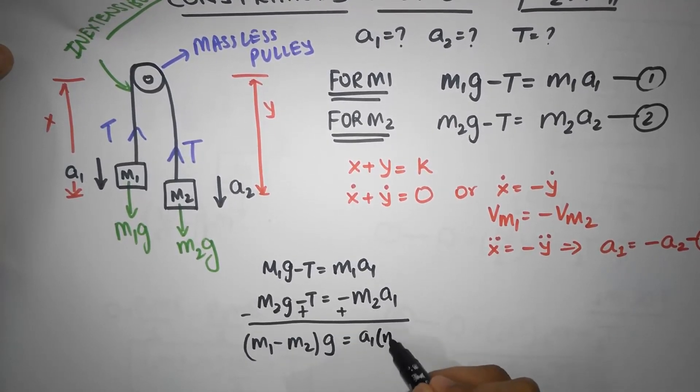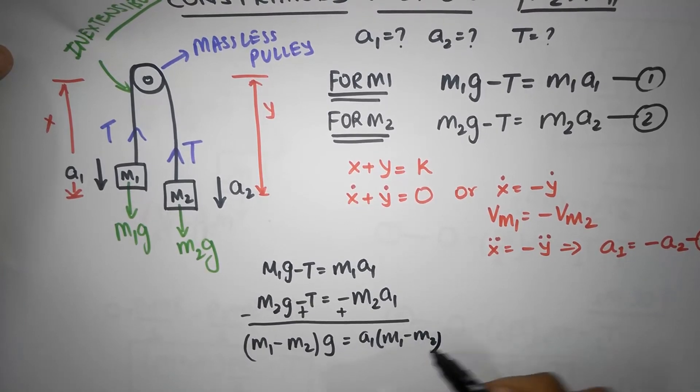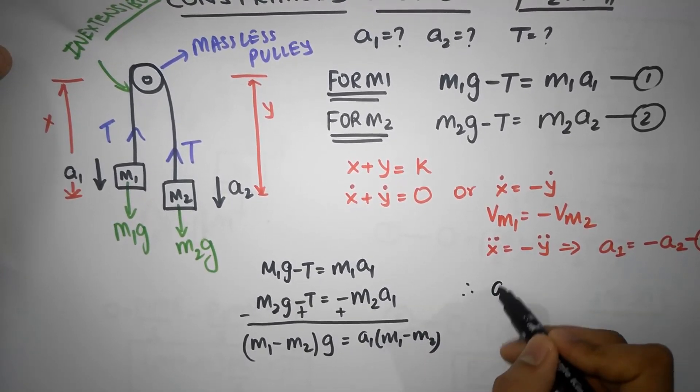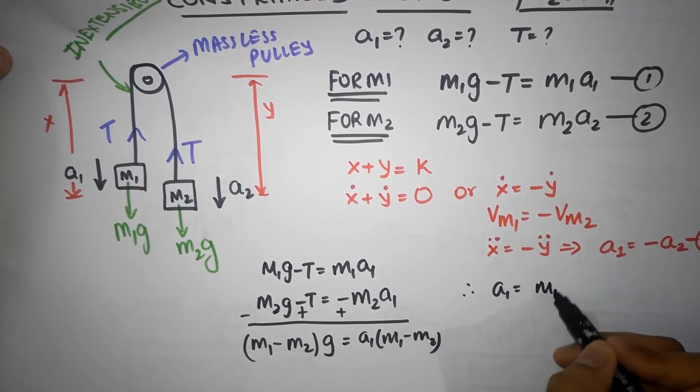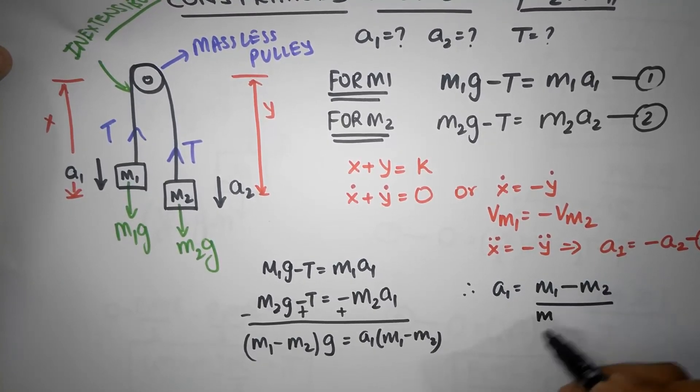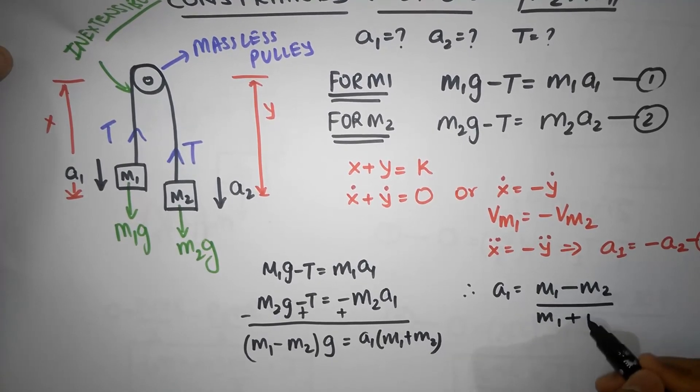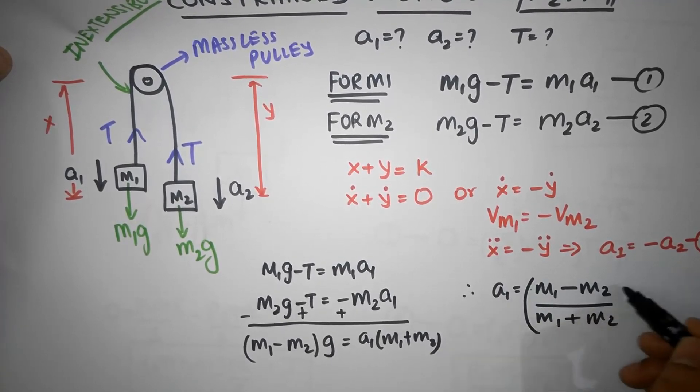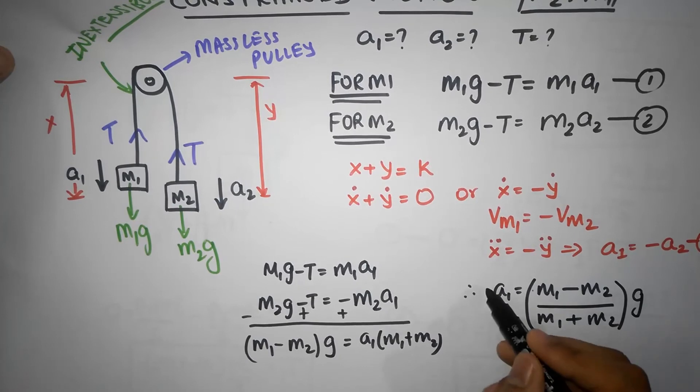And I'll end up with now M1 minus M2 times G must be equal to A1 times M1 minus M2. Therefore A1 is M1 minus M2 divided by M1 plus M2 times G.